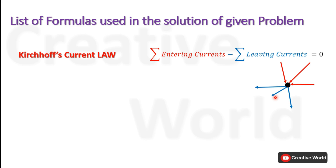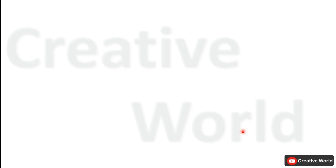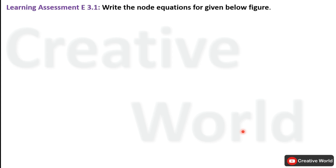We will also be using Ohm's Law. According to this law, the voltage across any resistance R is the product of the current through it and the value of the resistance itself. Now let's move towards the problem.